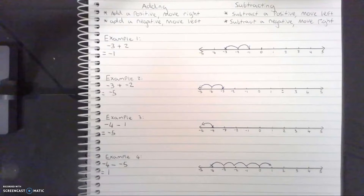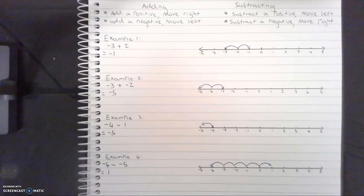Our final example: negative 4 minus negative 5. We put an x where our starting number is, negative 4. We are subtracting a negative this time, so that means we move to the right 5 places: 1, 2, 3, 4, and 5 — which gives us positive 1. And there you have it — that's how you can successfully add and subtract positive and negative integers.